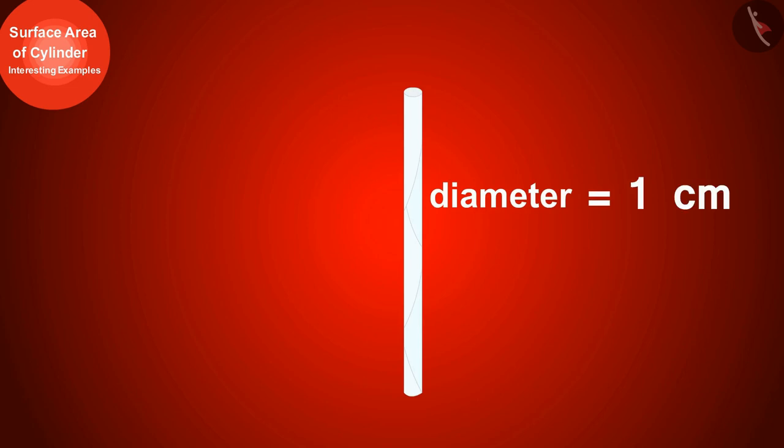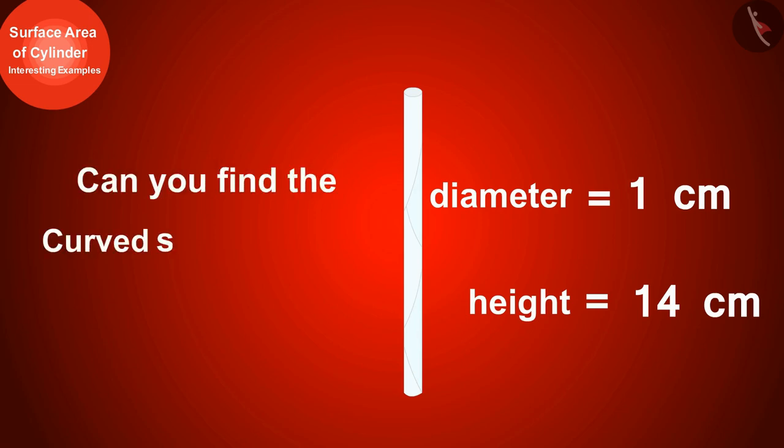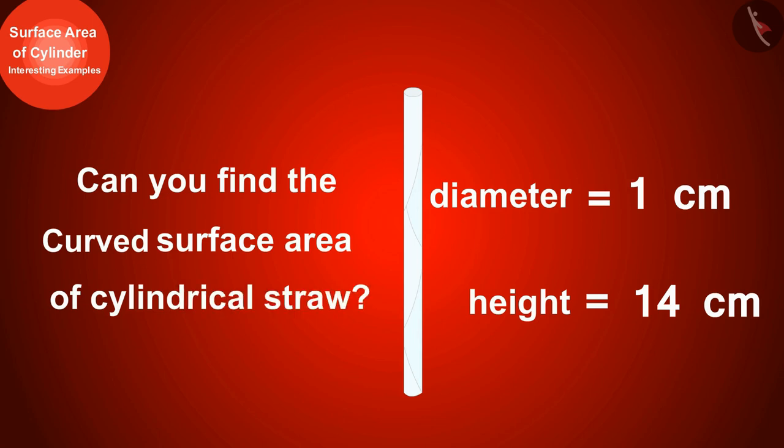Friends, if the diameter of the straw is one centimeter and the height is 14 centimeters, then can you find out the area of the paper used to make it by finding the curved surface area of this cylindrical straw? Pause the video to try yourself and then match your answer.